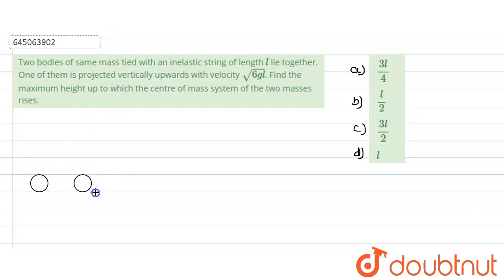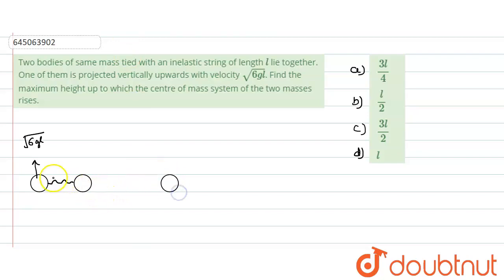So basically they are identical objects and they have been tied with a string. Initially the string would be in the relaxed condition. Now what is done: we are projecting one object with an upward velocity of √(6gl). The other stays on the ground. It rises, and when it finally rises to a height equal to l, the string would become tight.